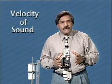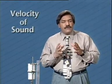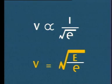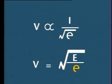The formula for velocity of sound in fluids is v = √(E/ρ), where E is the modulus of elasticity and ρ is the density of the medium.